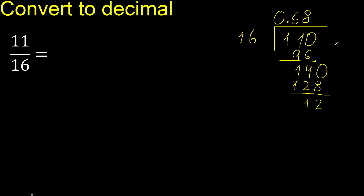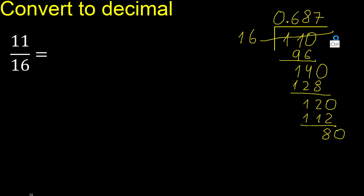Subtract. There is no number, therefore complete. 120: 16 multiply by which number? Multiply by 8 is greater, multiply by 7 — okay. Subtract. Complete with zero. 16 multiply by which number? Multiply by 5: 80. Remainder 0 — therefore finish.